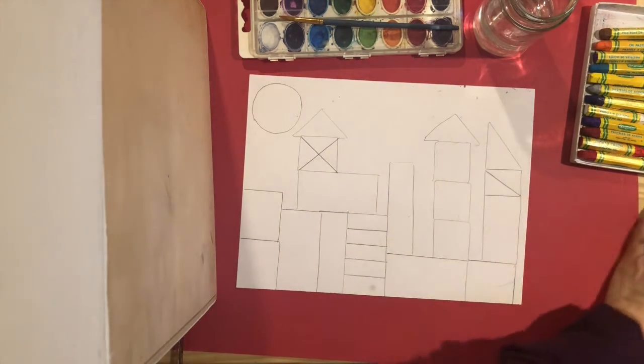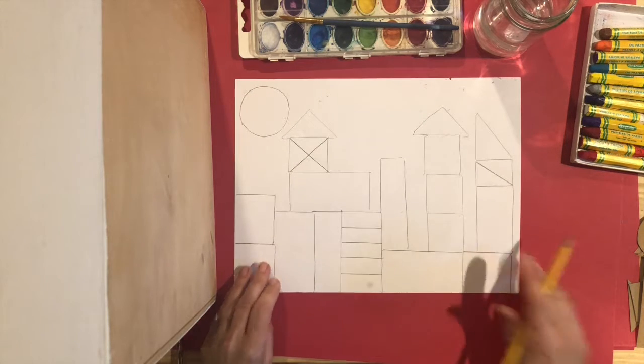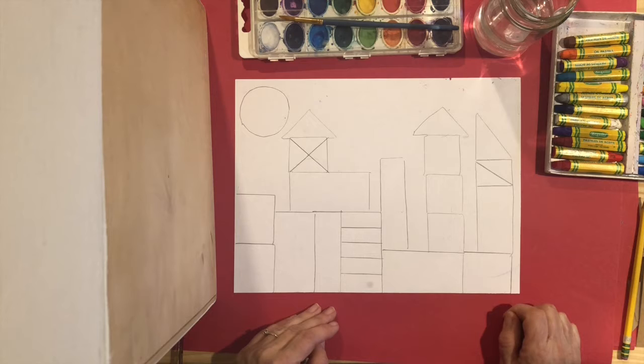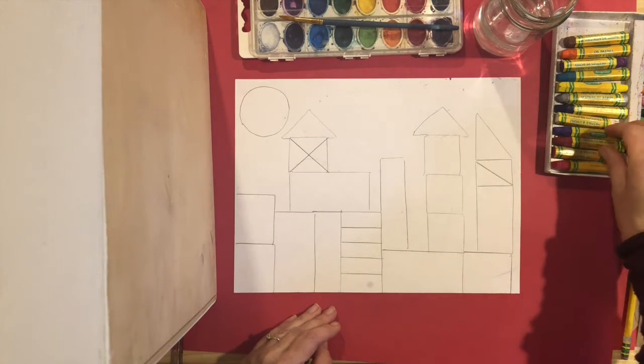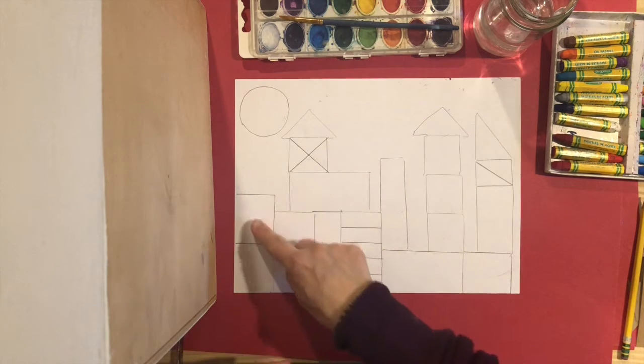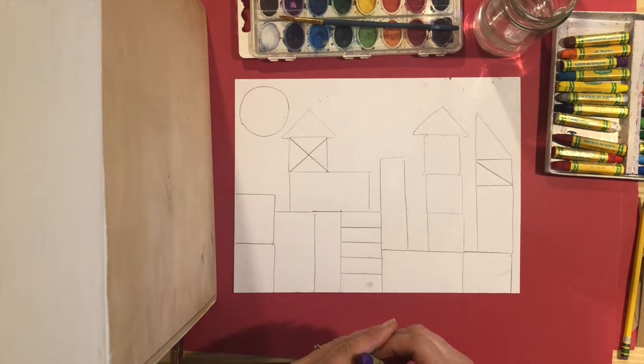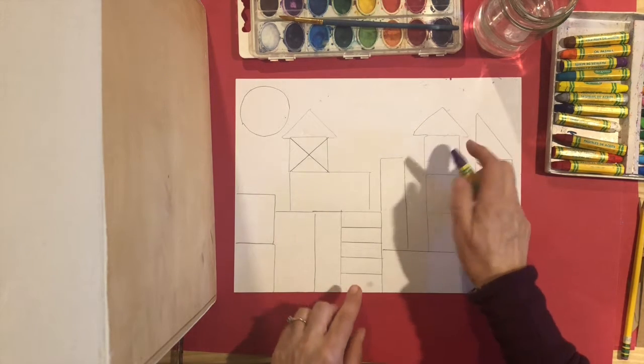Okay, so now you have your castle built. You are going to be using your crepa or your crayons to color them. When you color them, you want each square or triangle or rectangle to be a different color, and try not to put the same colors next to each other.